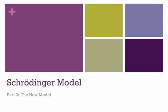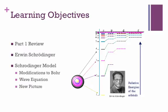In this video, we're going to continue our discussion of the Schrödinger model of the atom by talking about the model itself. Just a quick rundown of the learning objectives of this video. We're going to start with a review of part one.